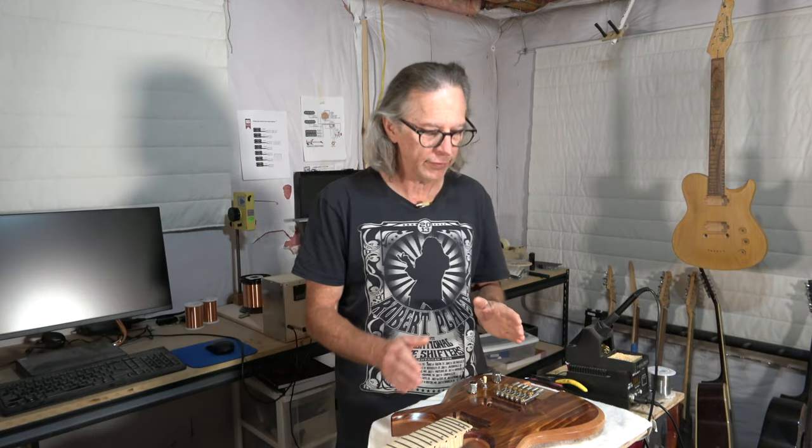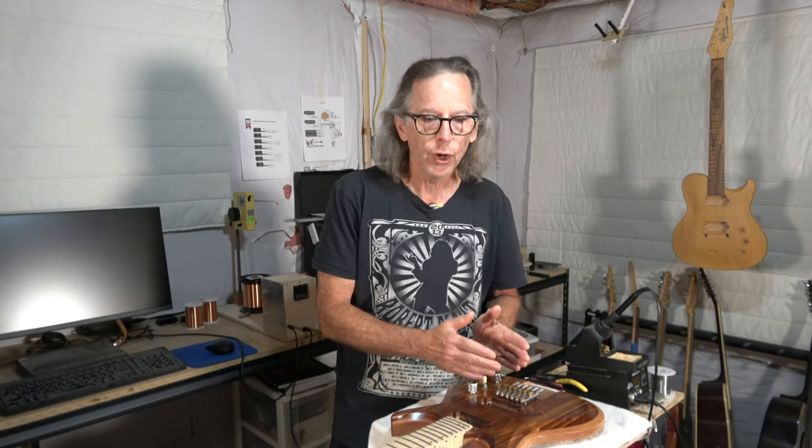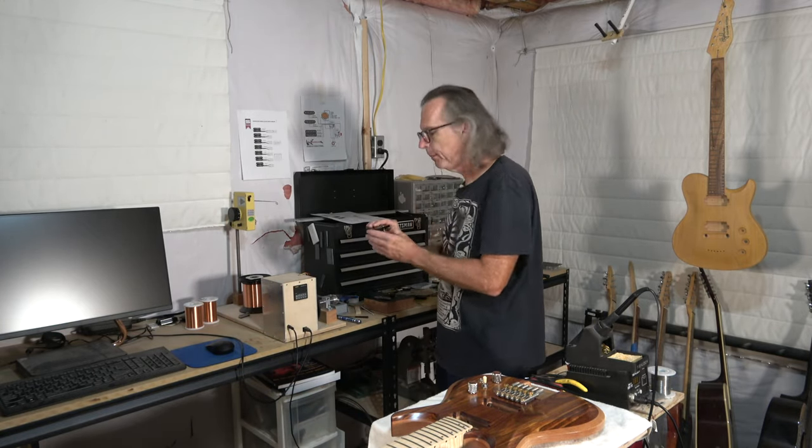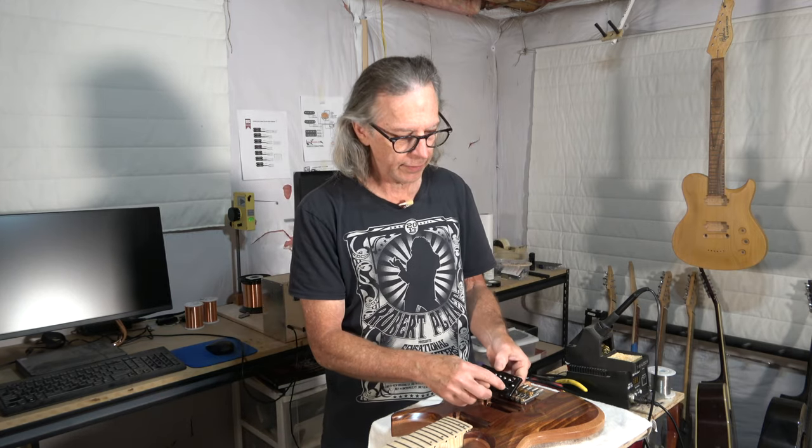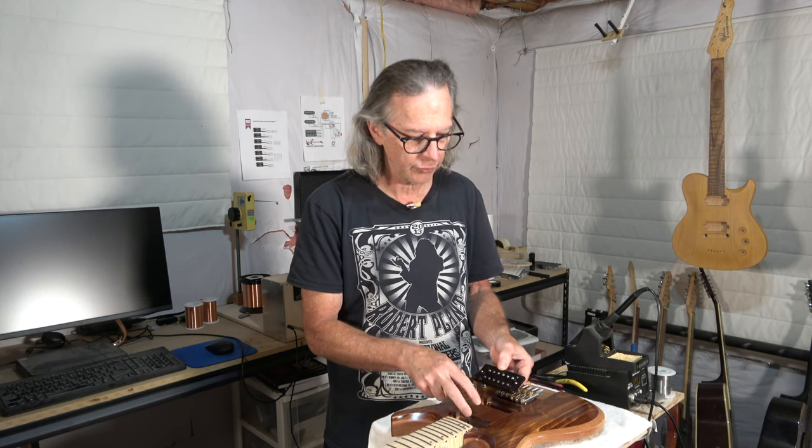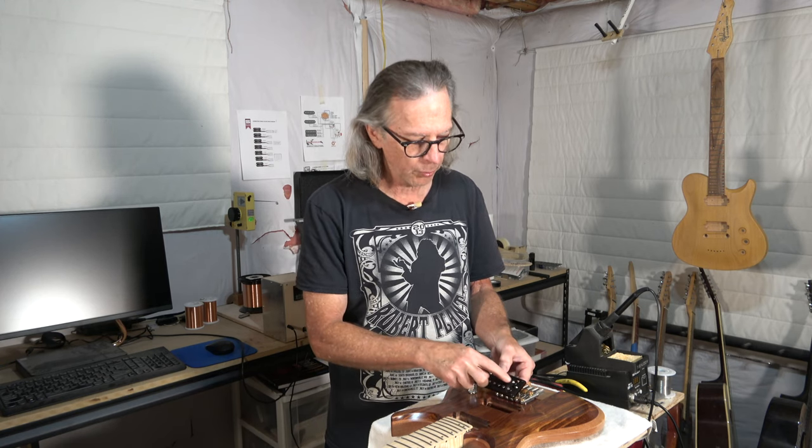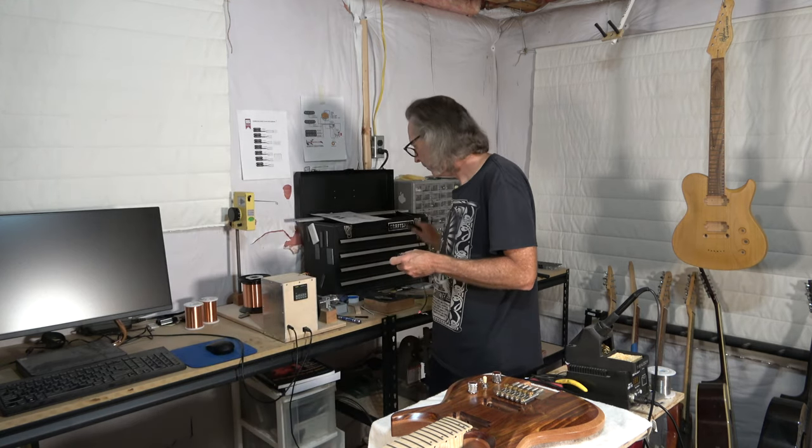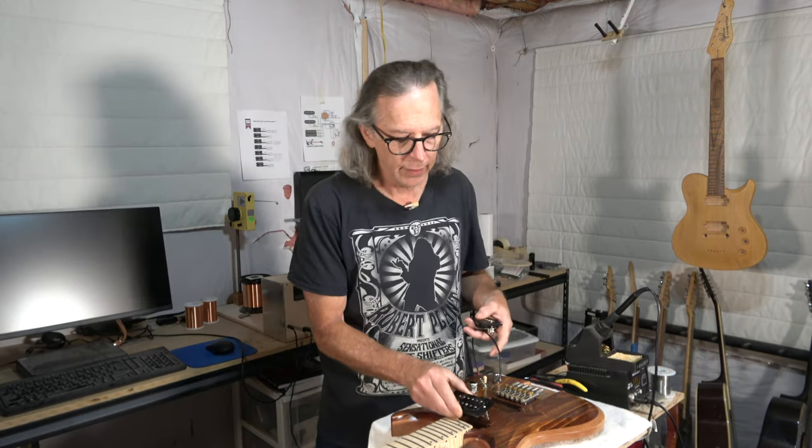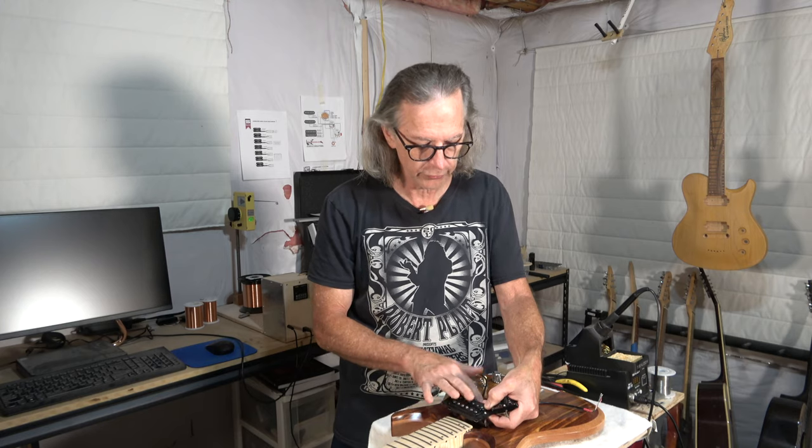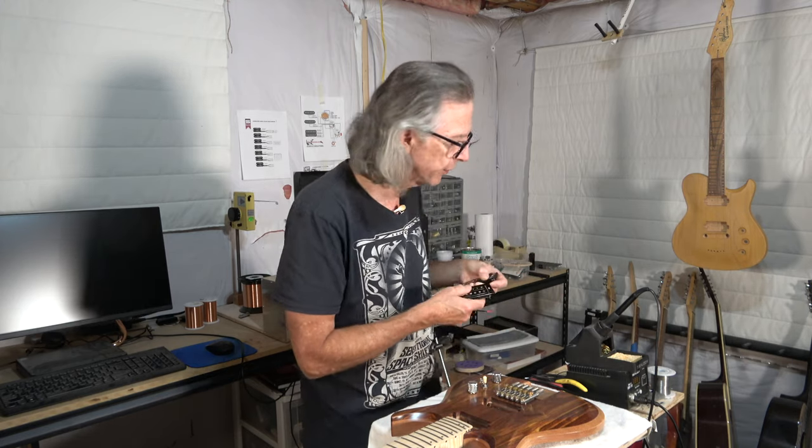Another key difference is the position of the bobbins. With the bridge pickup I typically will install it so that the slugs are towards the center between the center of the space between the two pickups and the adjustable pole pieces are up against the bridge. But with the neck pickup I do the opposite. The screws are away from the bridge and closer to the neck and the slugs are closer to that center of that space between the two pickups.